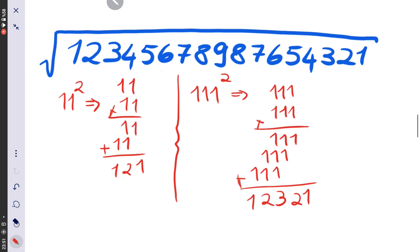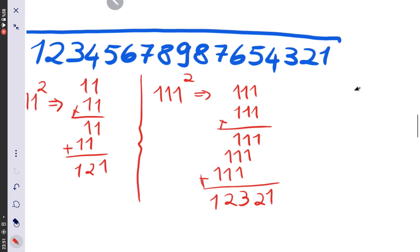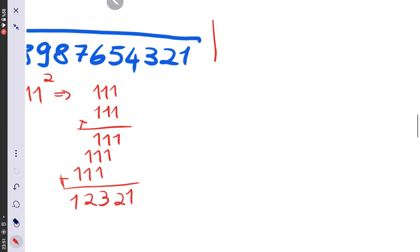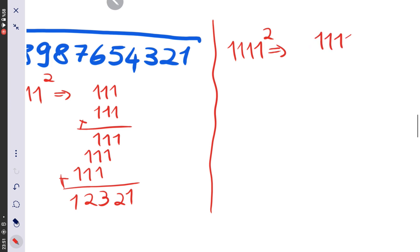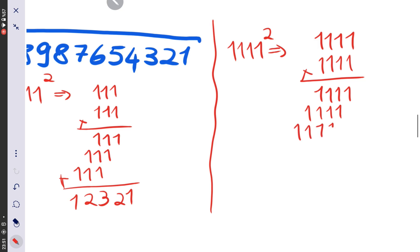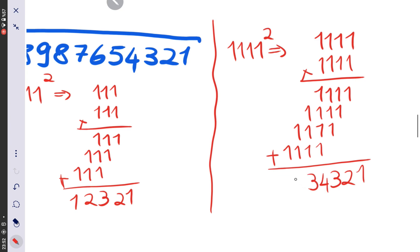Let's also look at 1111 squared — that's 1111 multiplied by itself. Working through the multiplication, we get 1 2 3 4 3 2 1.